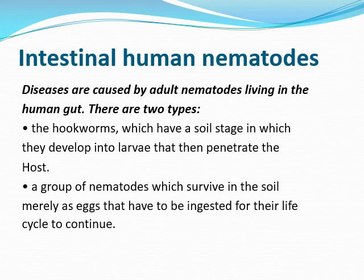Intestinal human nematodes are caused by adult nematodes living in the human gut. There are two types: hookworms, which have a soil stage in which they develop into larvae that then penetrate the host, and a group of nematodes which survive in the soil merely as eggs that have to be ingested for their life cycle to continue.